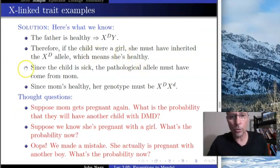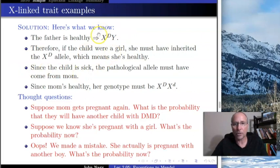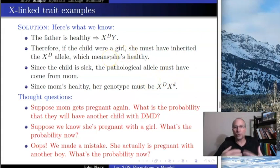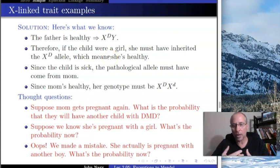We know more than that too. Since we know the child is sick and the father must be X^D Y, the sick child must have gotten the X^d chromosome from the mother. So the mother must be X^D X^d — she can't be X^d X^d because she herself does not have Duchenne muscular dystrophy. Those situations are fairly straightforward to work out.